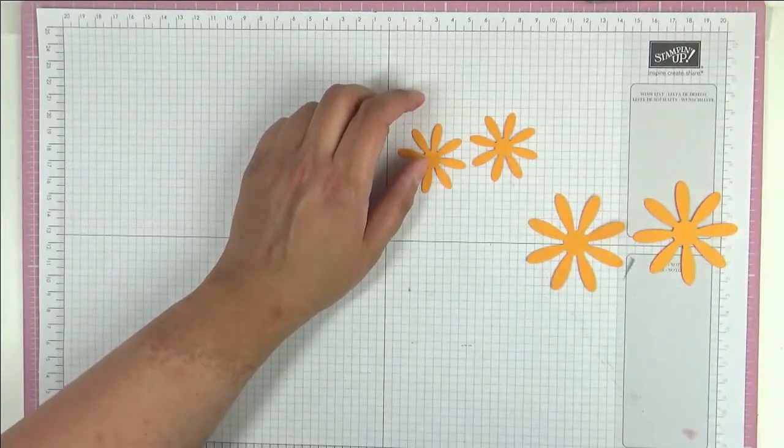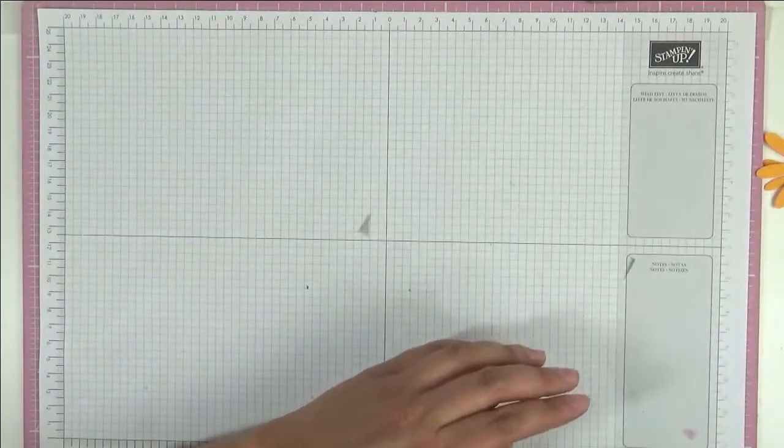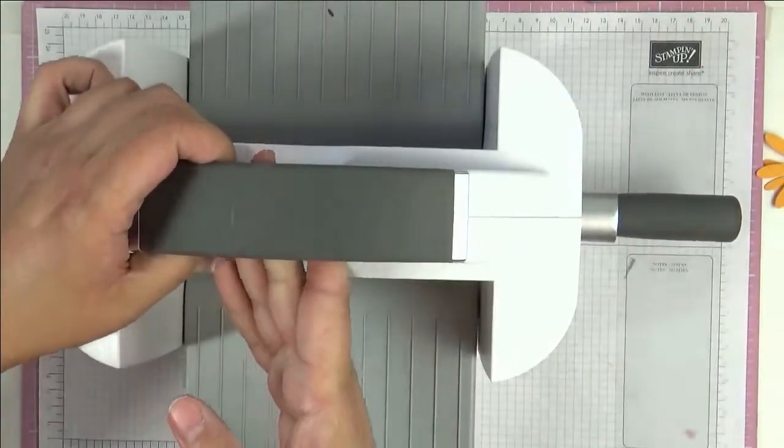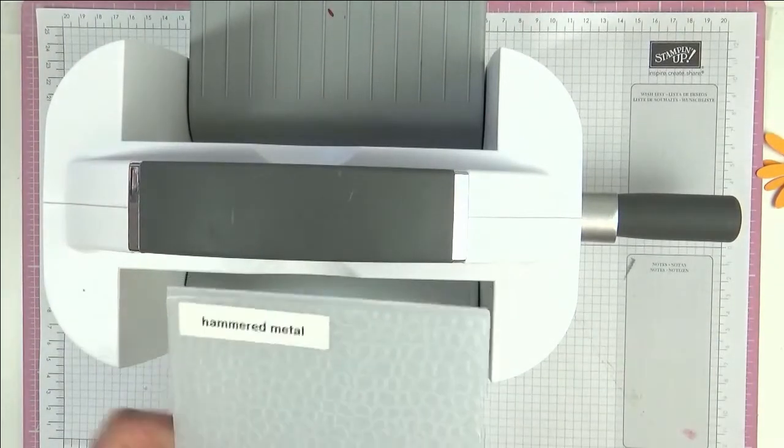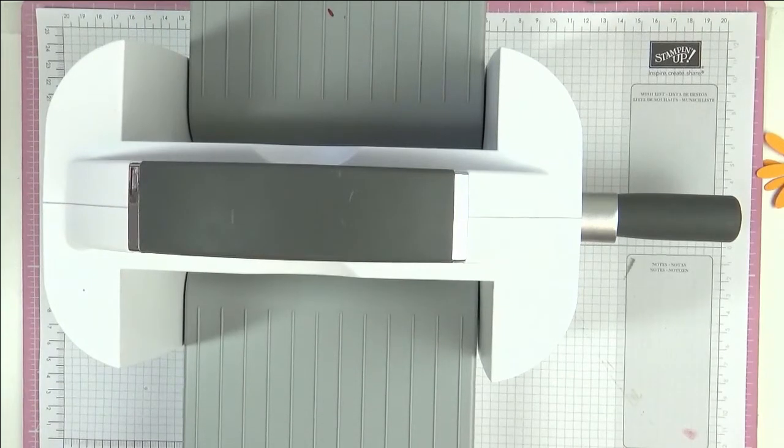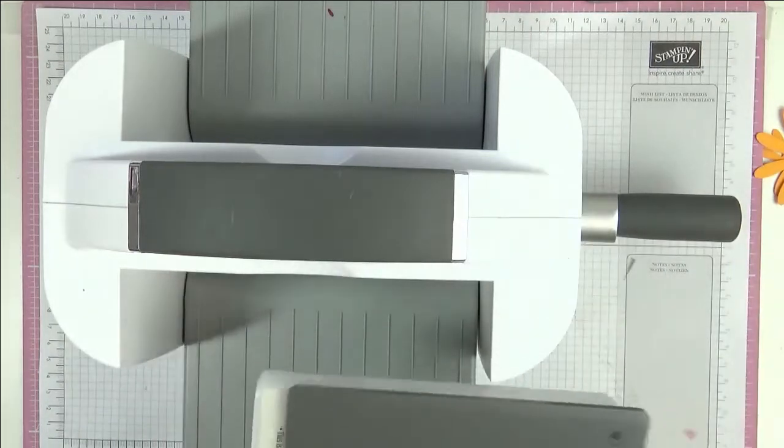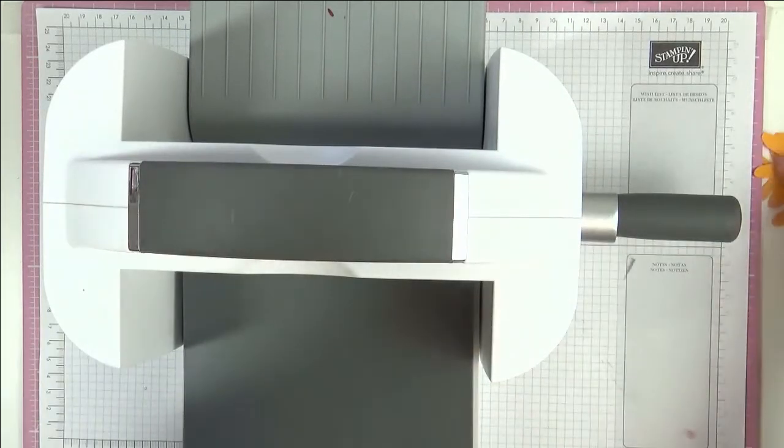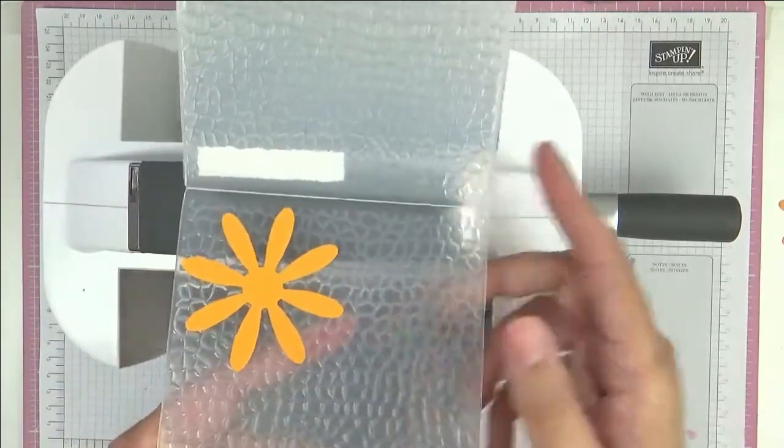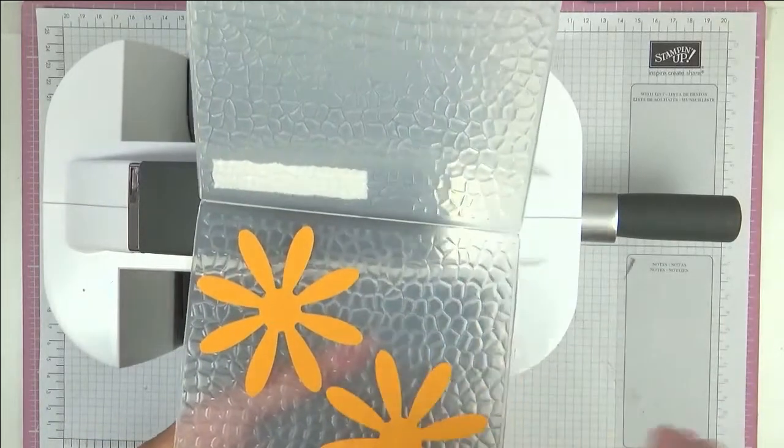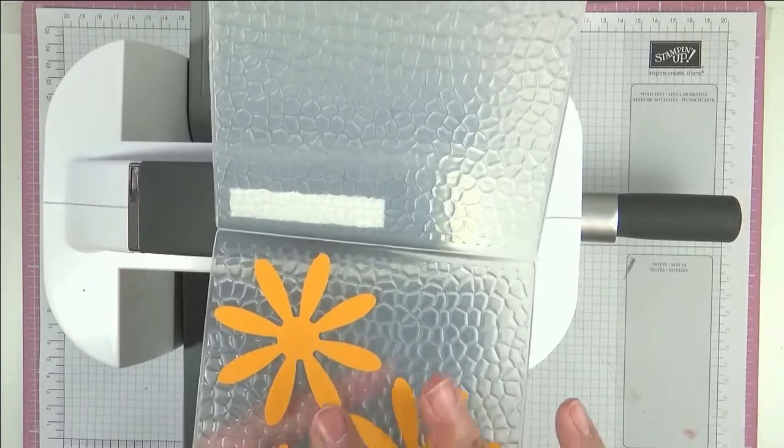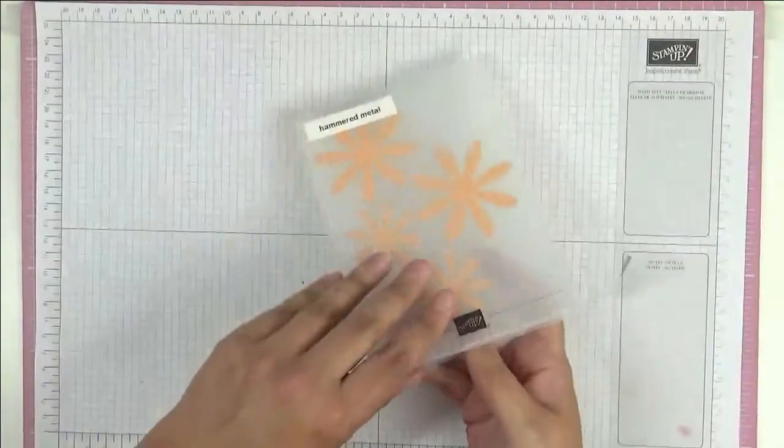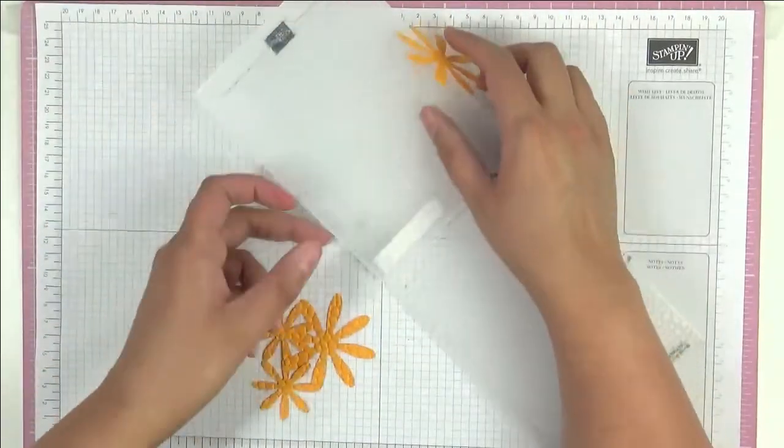So now we have our four daisies. I'm going to bring in the Big Boss machine. This is the Big Boss and I've got here the Hammered Metal 3D embossing folder. So let me get my plates. You just need the base plate and a specialty plate. Now I'm just going to put these daisies as you can see into the embossing folder and this should just give them some texture just like that.